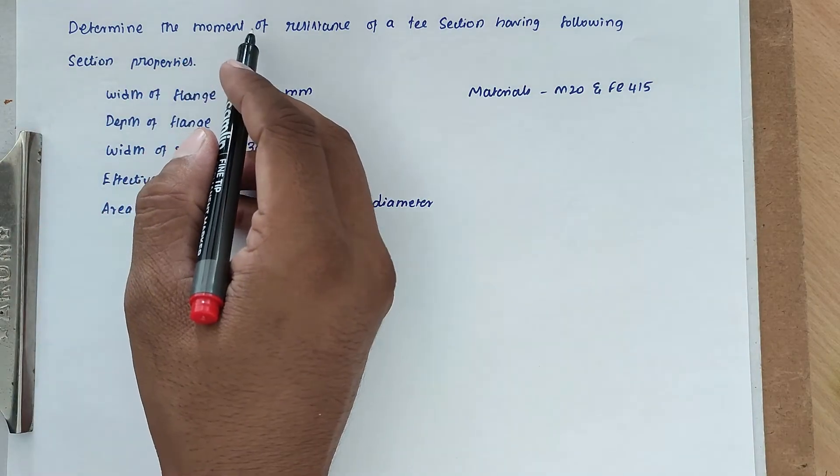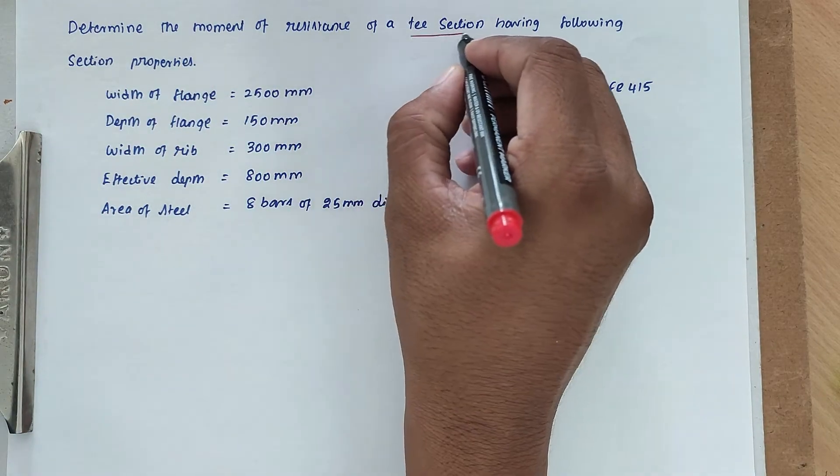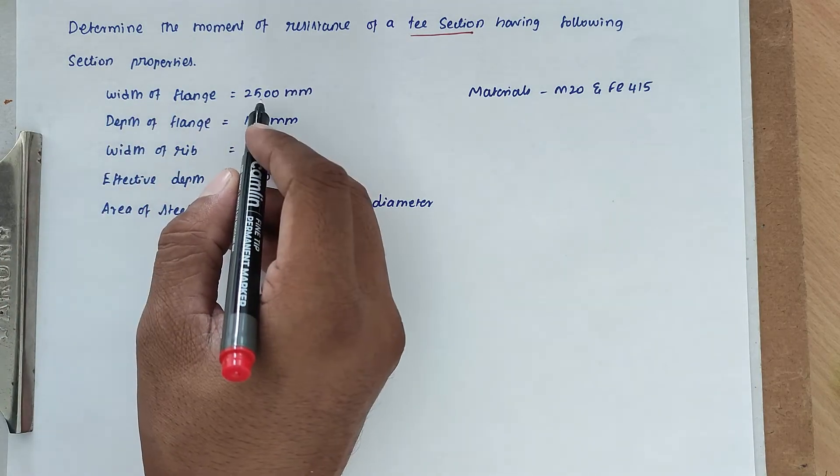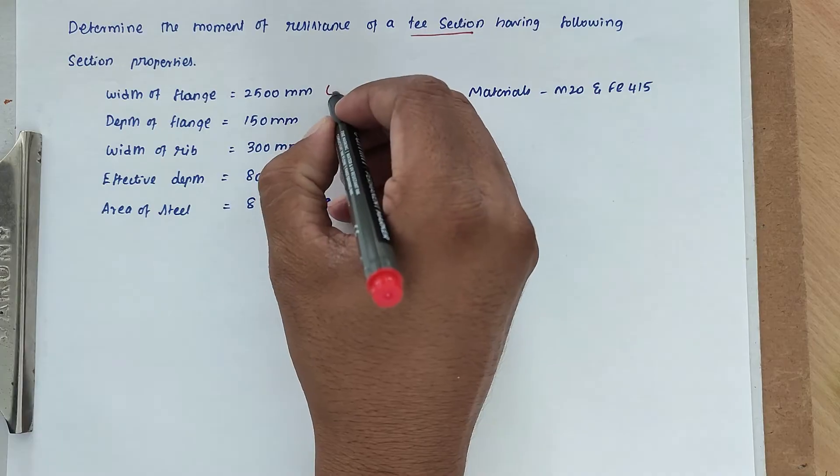The problem is to determine the moment of resistance of the T section having the following properties. First one, width of the flange BF is 2500 mm.